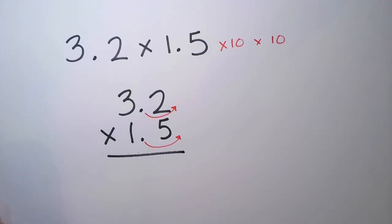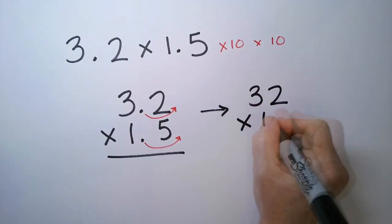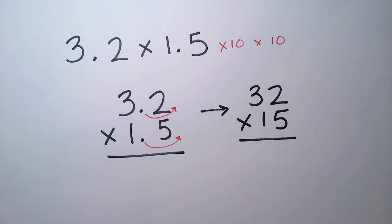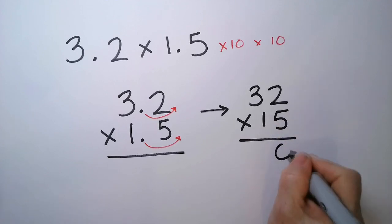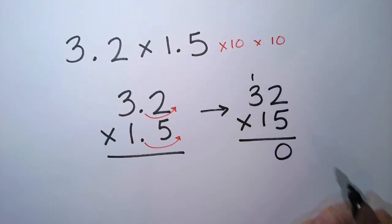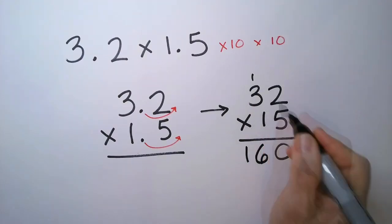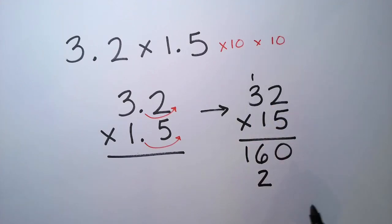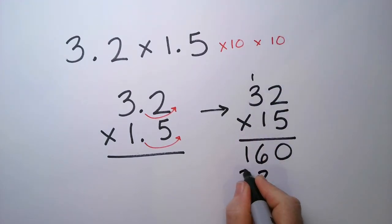So it makes the problem easier for us to do. So this is really 32 times 15, which we can do. This is just regular multiplication. So 2 times 5 is 10, carry the 1. 3 times 5 is 15, plus that 1 is 16. 1 times 2 is 2. 3 times 1, we ignore this because that was from the previous operation, just 3 times 1 is 3.